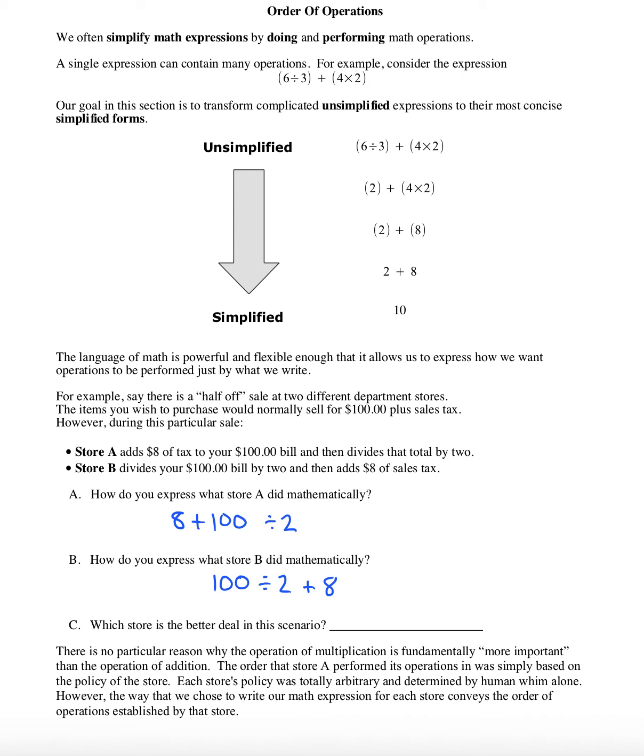The problem is that both of these expressions would actually yield the same result. That's because of the order of operations agreement that mathematicians have. Mathematicians have decided that whenever addition and division are in an expression, the division would be done first. So in both these cases, we would divide the $100 by $2 and then add the $8.